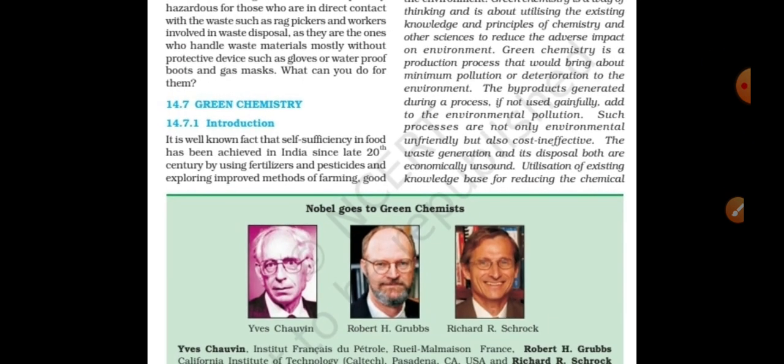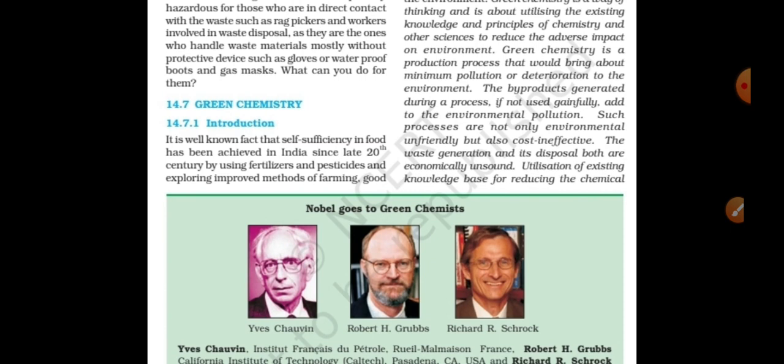It is well known that self-sufficiency in food has been achieved in India since the late 20th century by using fertilizers and pesticides, and exploring improved methods of farming good quality seeds and irrigation.